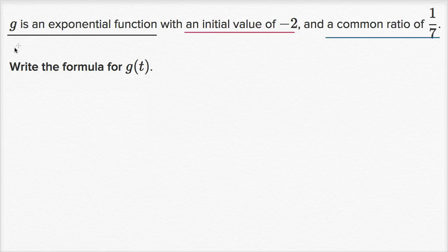Well, the fact that it's an exponential function, we know that its formula is going to be of the form g of t equals our initial value, which we could call a, times our common ratio, which we could call r, to the t power. It's gonna have that form.